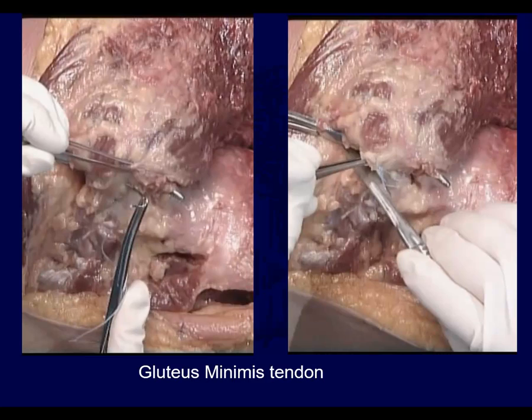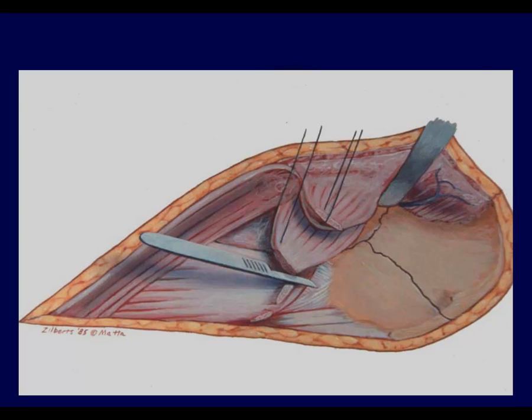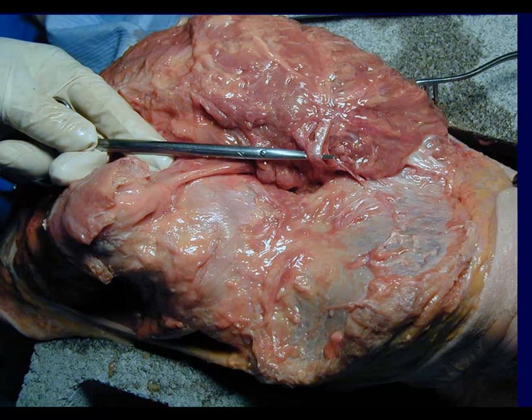Basically you've taken the tendons off. Here you can see the tenotomy of the abductors off of the femur — everything's already taken off of the pelvis. You have a retractor in the sciatic notch, and everything's being reflected posteriorly. This is a cadaver, so the tissues are not ideal, but the ilium and hip joint will be here.